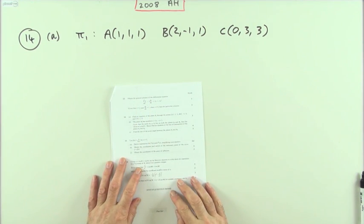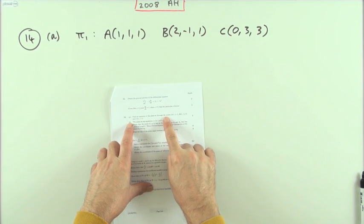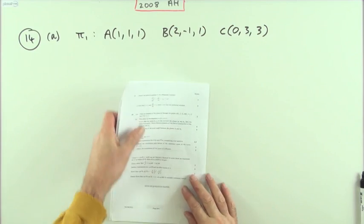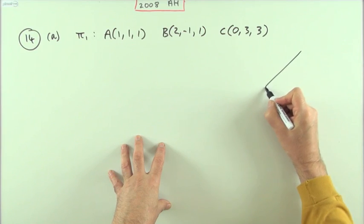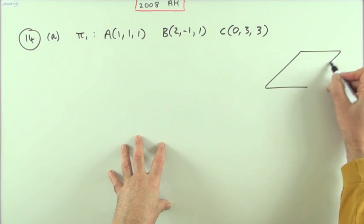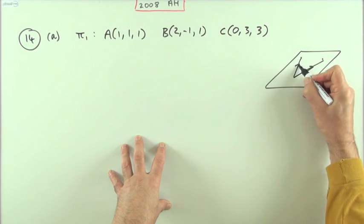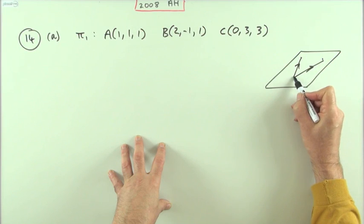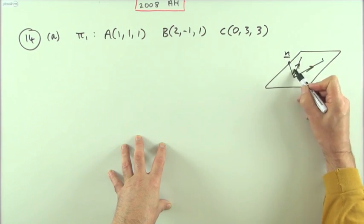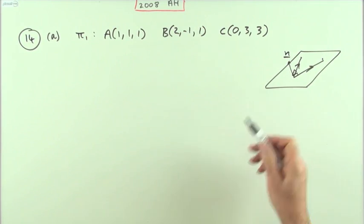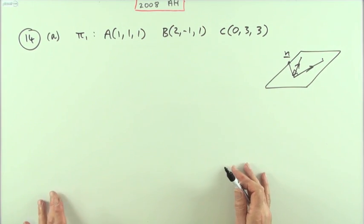Number 14 from the 2008 Advanced Higher, three parts. First part: find the equation of a plane given three points on the plane. That's straightforward enough. If I've got three points on the plane I can find two vectors that lie in the plane, and from that get the normal vector — the vector at right angles to them both — and then using the scalar product will give me the Cartesian equation.